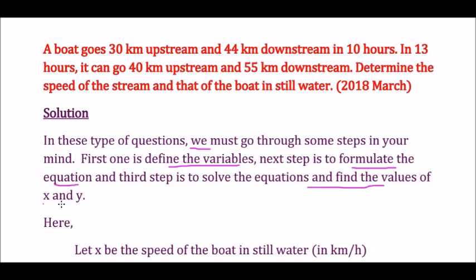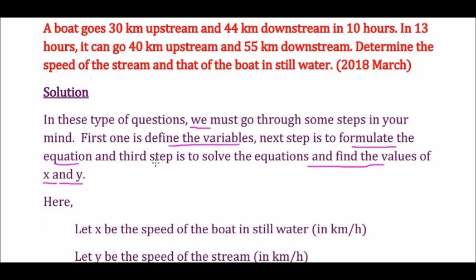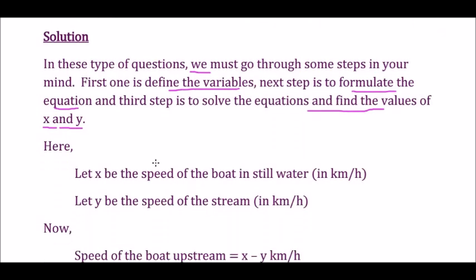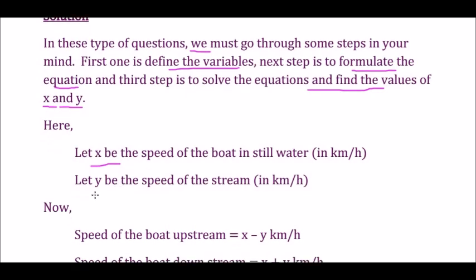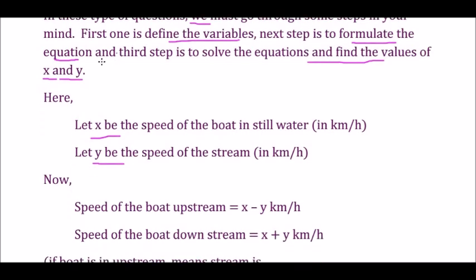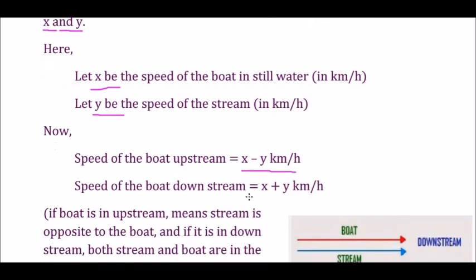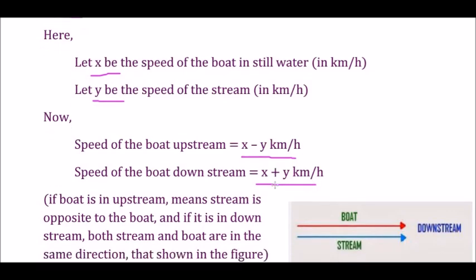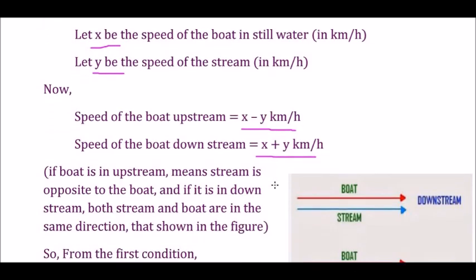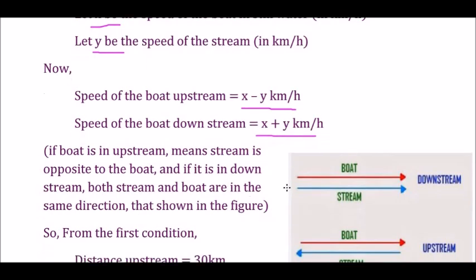Let X be the speed of the boat in still water in kilometers per hour, and let Y be the speed of the stream in kilometers per hour. The speed of the boat upstream is X minus Y km/h, and the speed of the boat downstream is X plus Y km/h. When the boat is upstream, the stream is opposite to the boat's direction; when downstream, both the stream and the boat move in the same direction.